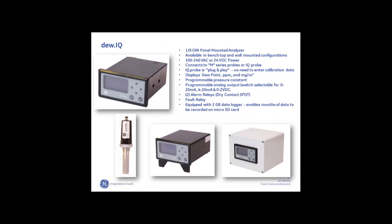The calibration data is stored in the probe and automatically uploaded when powered. You can stock a spare probe and rotate them in and out of service — with smart probes there's no possibility of entering the wrong calibration data. The unit also has relay outputs that can be set to alarm at preset values. Some customers use those relays to engage a heating cycle, a regeneration cycle, or turn on a purge gas when things get too wet. In addition to the relays, there is a programmable linear 4 to 20 milliamp analog output and a two-gigabyte data logger.